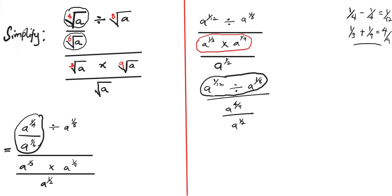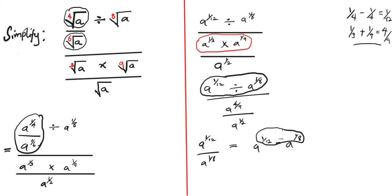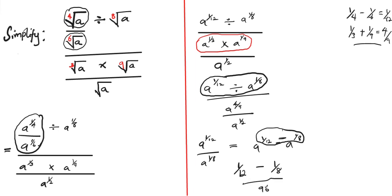Next, let's handle a to the power one over twelve divided by a to the power one over eight. This equals a to the power one over twelve minus one over eight. Let's carry out this subtraction: one over twelve minus one over eight. The LCM of twelve and eight is 96. One times eight is eight, minus one times twelve is twelve, so eight minus twelve equals negative four.